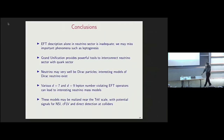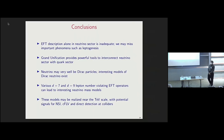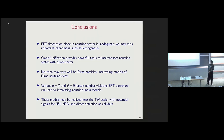In conclusion: the effective field theory description is good, but it cannot be the end goal and will be inadequate. Grand unification provides a powerful tool to interconnect the neutrino sector with the quark sector. Neutrinos could be Dirac particles — interesting models do exist. Or neutrino mass could be generated through higher-dimensional operators beyond the Weinberg operator, leading to TeV-scale new physics that can be tested. Thank you.